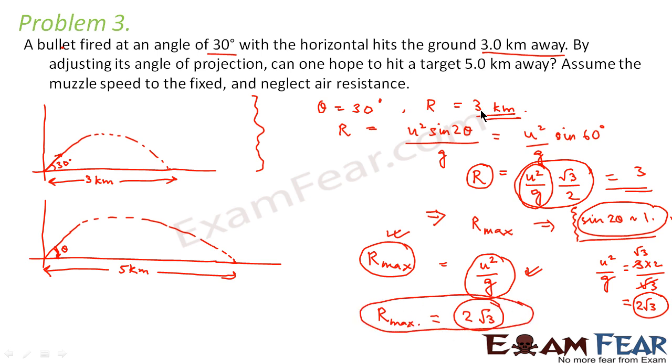Now what does your question ask? Your question says that is it possible to make it travel a distance of 5 kilometers by changing its angle? So it is not possible because it cannot hit the ground at a distance of greater than 2 root 3 kilometers. So if you calculate this 2 root 3 kilometers, it comes out to be 3.46 kilometers. So the maximum distance that this projectile can go is 3.46 kilometers, maybe somewhere up to this distance, but not more than that. So it cannot hit the ground 5 kilometers away.